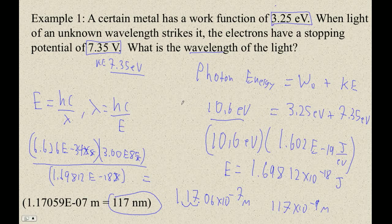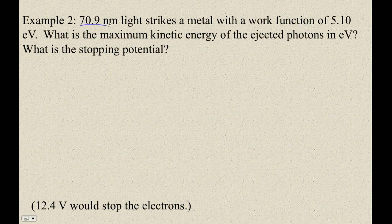So basically, the key for photoelectric effect problems is work in electron volts. And then you also have to be able to turn electron volts into wavelength, wavelength into electron volts. Let me work out another example for you. So 70.9 nanometer light strikes a metal. There's our work function. And we want to know what is the maximum kinetic energy in electron volts? What's the stopping potential? Well, they're going to be the same thing. If 12.4 electron volts is our energy, then we would stop electrons with 12.4 volts.